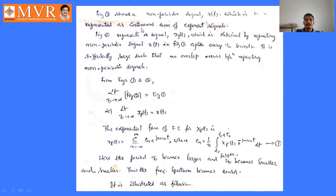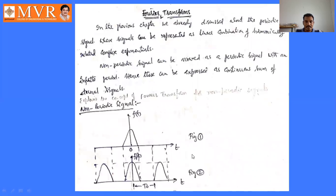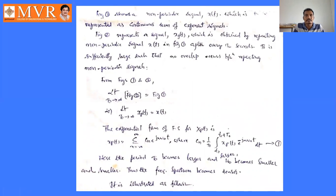Figure one shows a non-periodic signal x(t) to be represented as a continuous sum of exponential signals e^(jθ) + e^(−jθ). Figure two represents xp(t), obtained by repeating non-periodic signal x(t) with some finite time period. From figures one and two: lim(T₀→∞) fp(t) = x(t), that is, limit T₀ tends to infinity of fp(t) equals x(t).